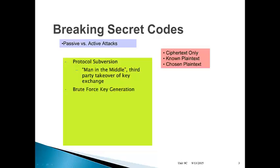Brute force key generation. Keys exist in a key space — how many bits long is a key, and how long can it take to generate every possible random key? On the average, half that time you'll find a hit. Sometimes with older cryptographic algorithms like the old DES algorithm, the old 56-bit one, modern-day computing equipment can do this quite effectively. This is where the constant increase in processor speed actually tends to make cryptography less secure over time.